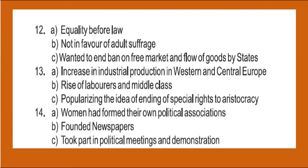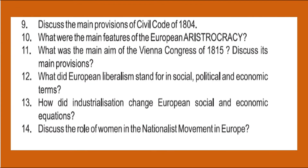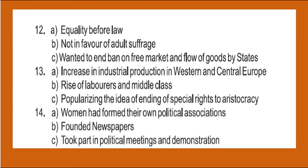Question number 12: What did European liberalism stand for — politically, socially, and economically? Socially, liberalism stood for equality before law. But politically, liberalism did not support universal adult franchise. It supported voting rights only for men with property, and it denied voting rights to women. So universal suffrage was not supported by the concept of liberalism. Economically, they wanted to end the ban on the free market flow of goods between states.